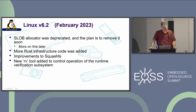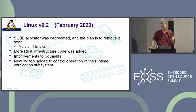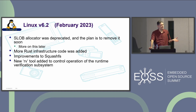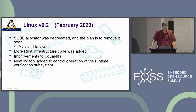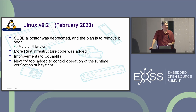In 6.2, the SLOB allocator was deprecated. This was introduced a long time ago as part of the config-tiny patches, and it's being deprecated because nobody seems to be using it. More Rust infrastructure code was added, there are improvements to SquashFS, and there's a new RV tool — a runtime verification tool upstream that allows you to manage the models used for runtime verification.